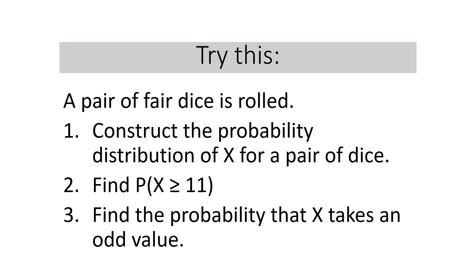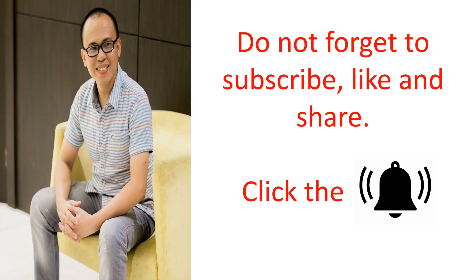I'd like you to do this exercise: a pair of fair dice is rolled. Let X denote the sum of the number of dots on the top faces. Construct the probability distribution of X for a pair of fair dice. Find the probability of X greater than or equal to 11. Find the probability of X taking an odd value. Do not forget to subscribe, like, and share. Click the bell icon to be notified every time we have a new session. See you in the next lesson.